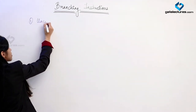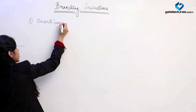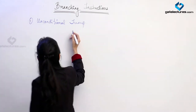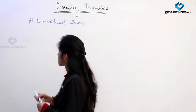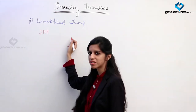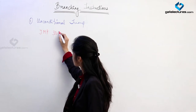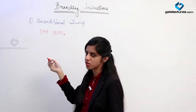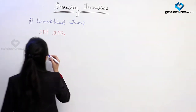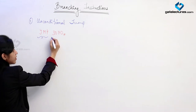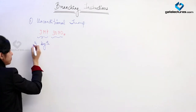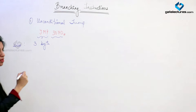First is unconditional jump. The instruction we are using is JMP, and we are giving a 16-bit address — whatever address you want to jump to — for example, JMP 3070. This is a 3-byte long instruction: 1 byte stores the opcode, then 2 bytes are required for storing the address.